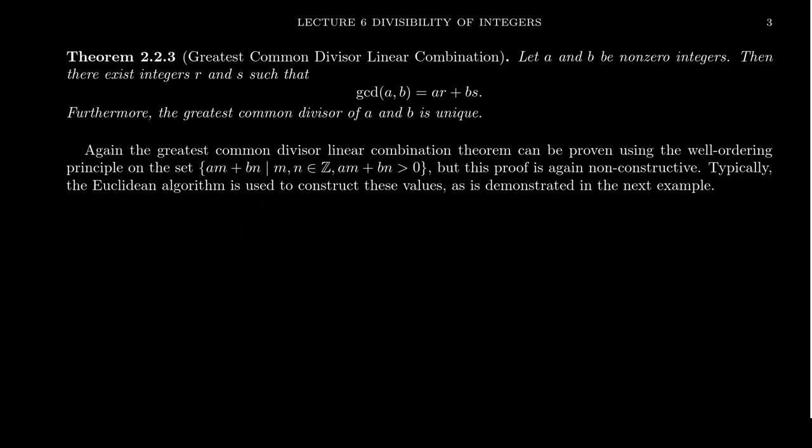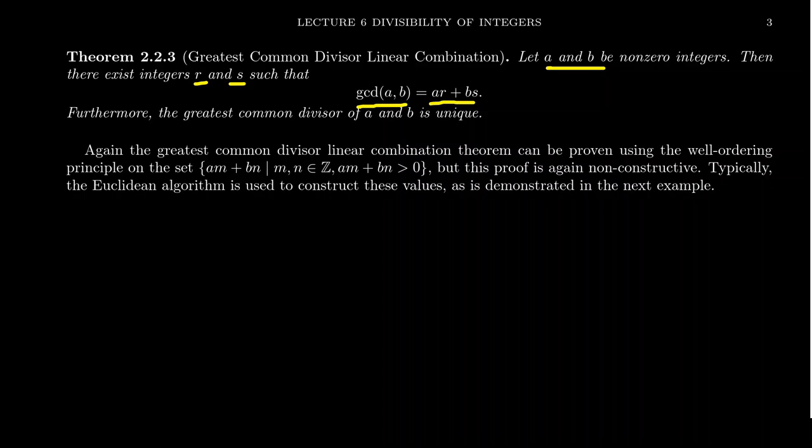Now, one important aspect about GCDs is if you have two non-negative integers, a and b, then there exist integers r and s such that the gcd of a and b is equal to ar plus bs. That is to say that the greatest common divisor can be written as a linear combination, an integer linear combination of the two numbers you started with. There's some combination, some integer combination of the two numbers a and b that produces the GCD. And I should also mention that the GCD of any two integers is a unique quantity. And uniqueness basically is coming from this expression right here.